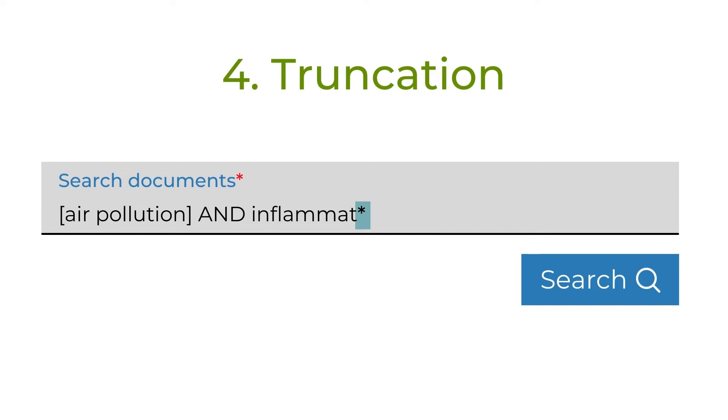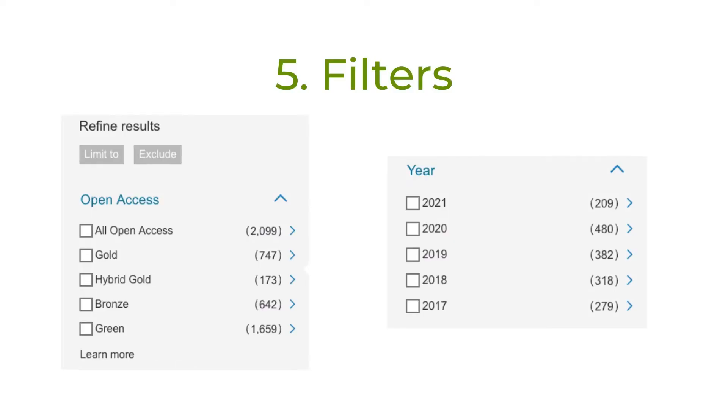Don't truncate too early in the word, though, or you may end up with a lot of irrelevant results. Once you have the concepts laid out the way you want, hit the blue search button to run your search. Now it's time to look at the filter list on the left side of the screen to see if there are any relevant filters you should use. Be careful, though—if you use too many filters, you'll end up with nothing.